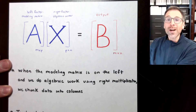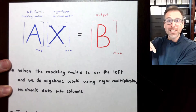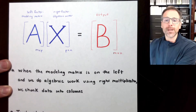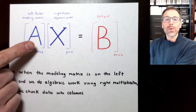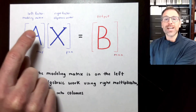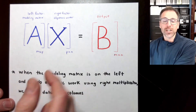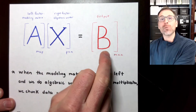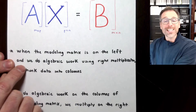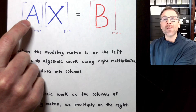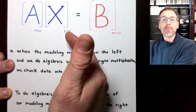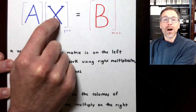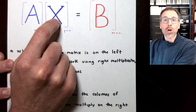Remember, we're going to develop four different versions of matrix-matrix multiplication. This video and the last two were all about doing matrix-matrix multiplication via linear combinations of the columns of the modeling matrix. The intuition I want you to develop is: when we have the modeling matrix on the left-hand side and we're doing algebraic work using right matrix multiplication, we chunk the data into columns — we break A into columns, X into columns, and B into columns.